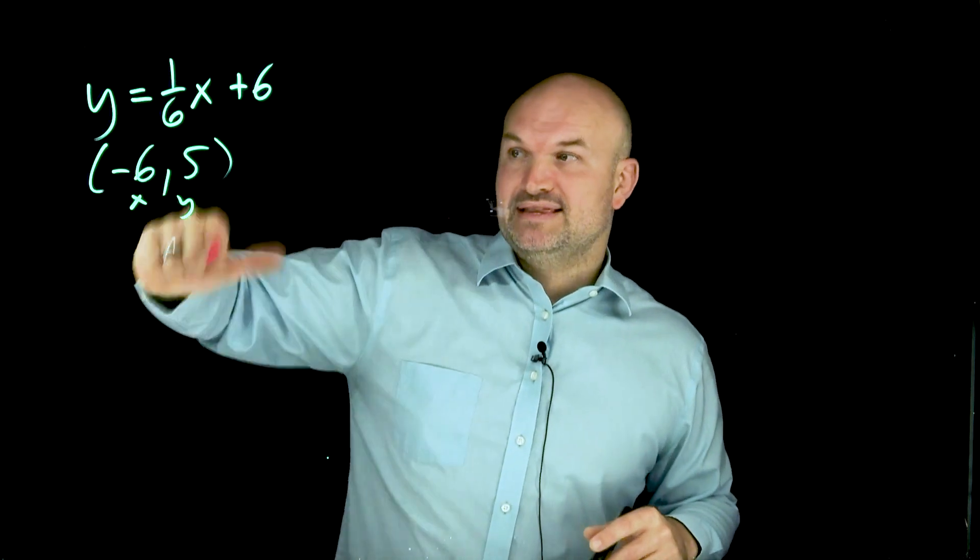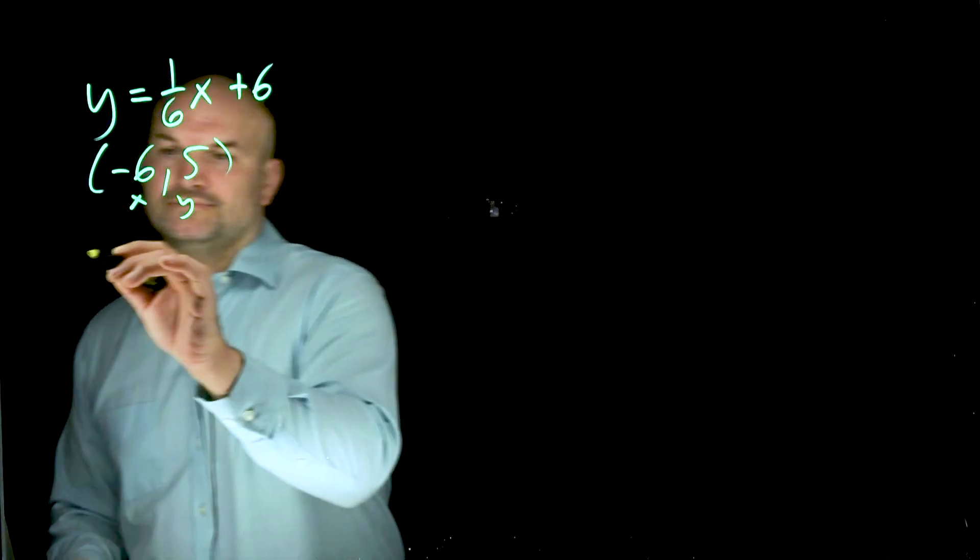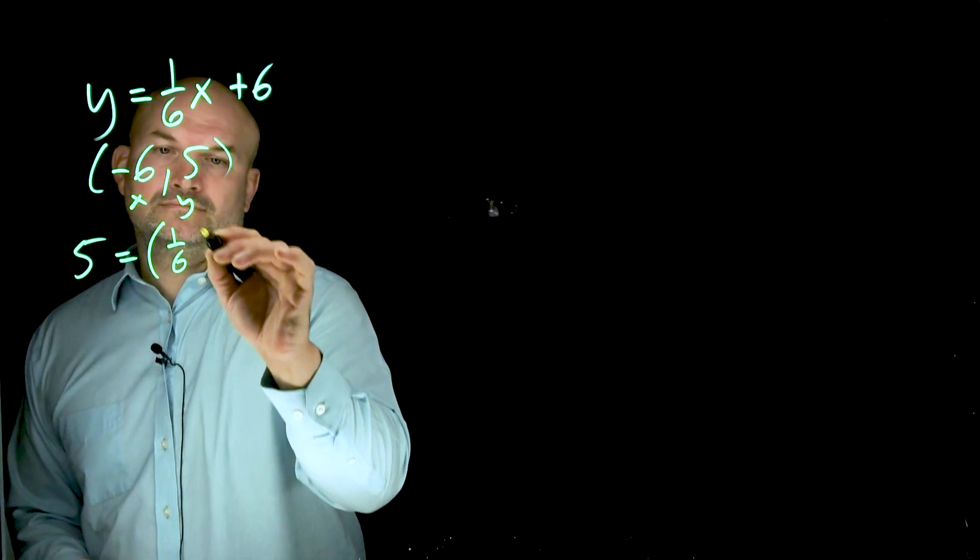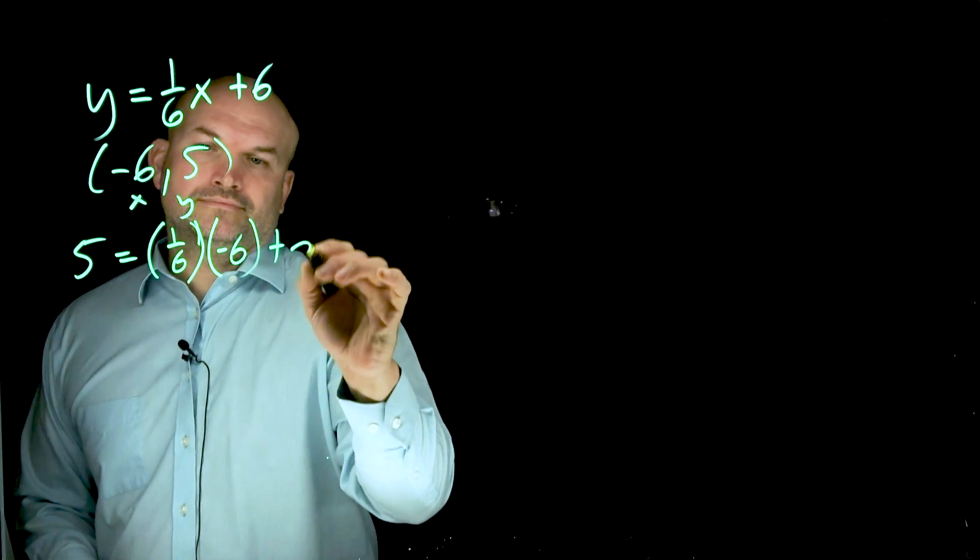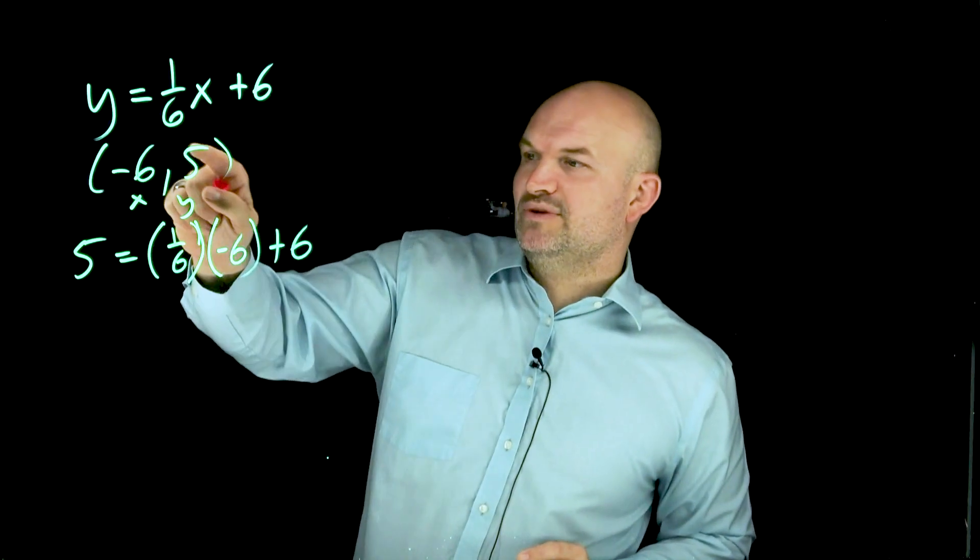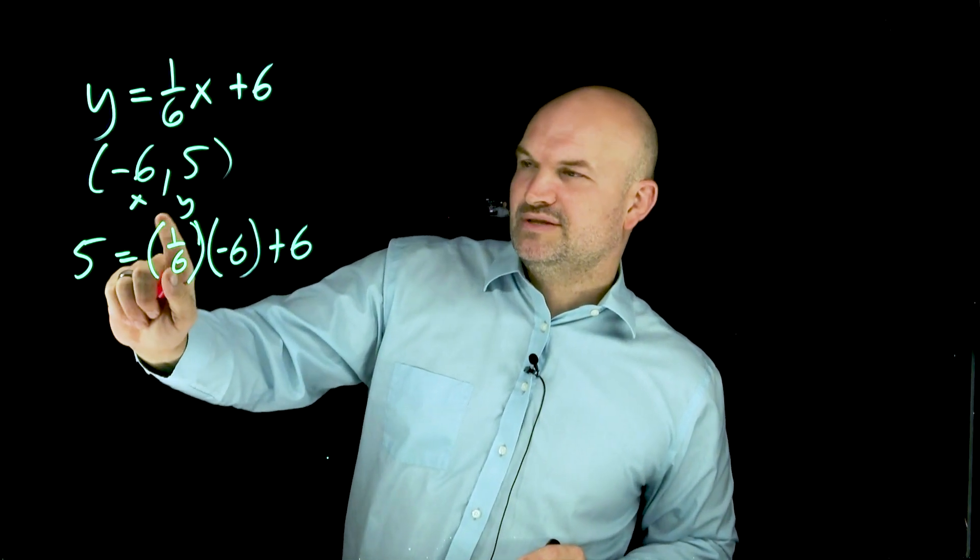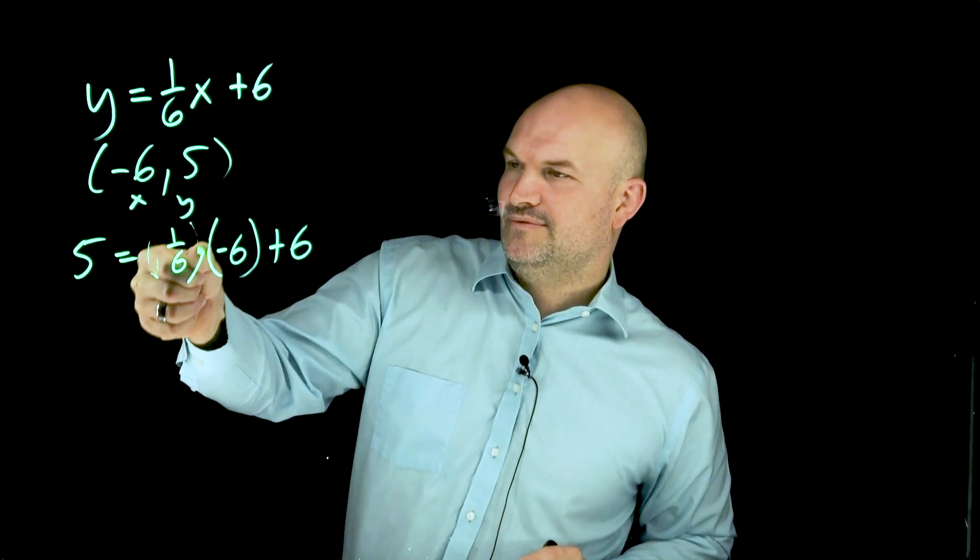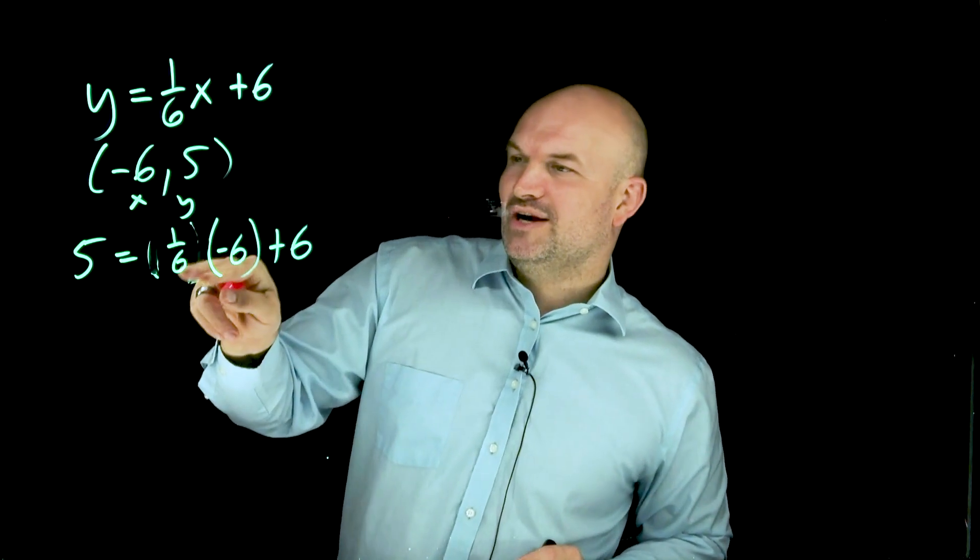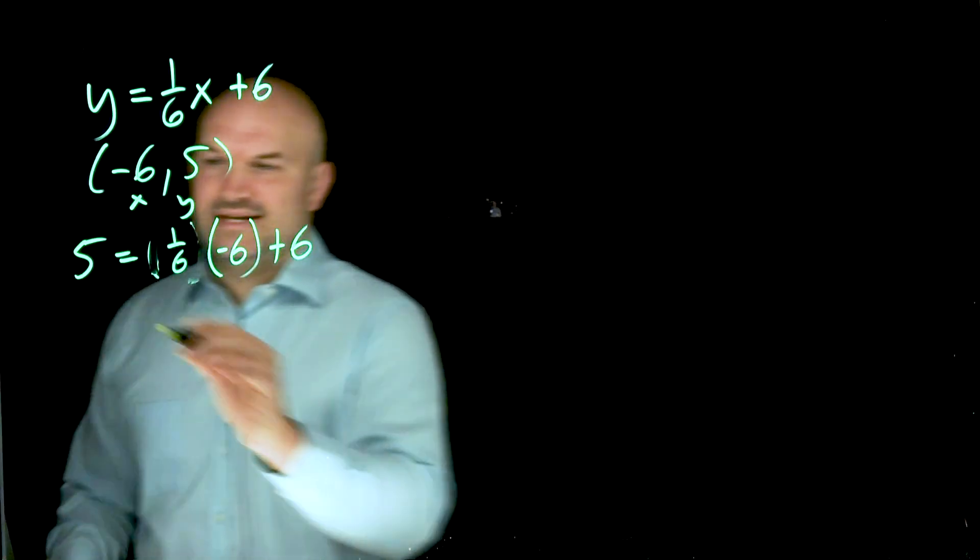Can I plug this point into this equation? And if that makes it true, then that means the point lies on the line. So I replaced Y with five and X with negative six. One-sixth times negative six is just going to be negative one.